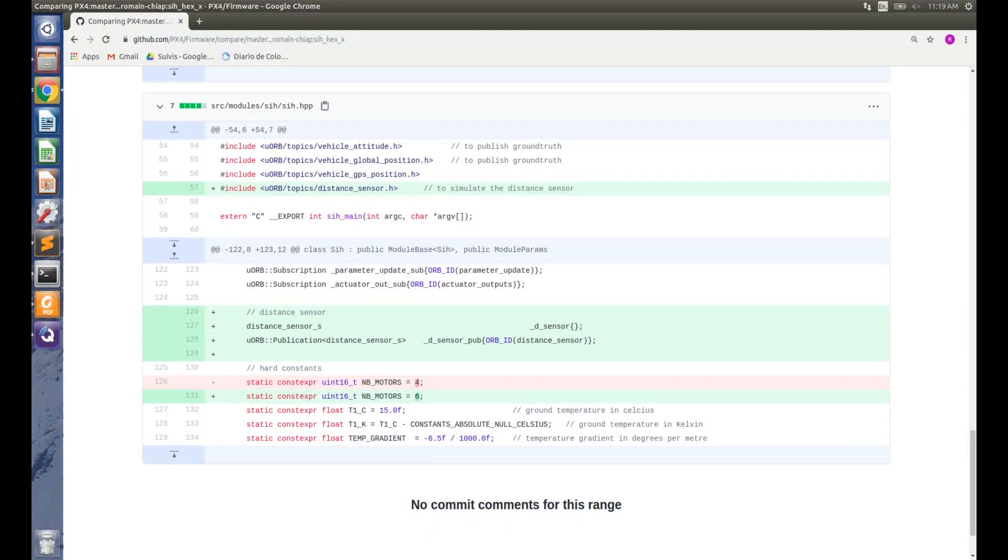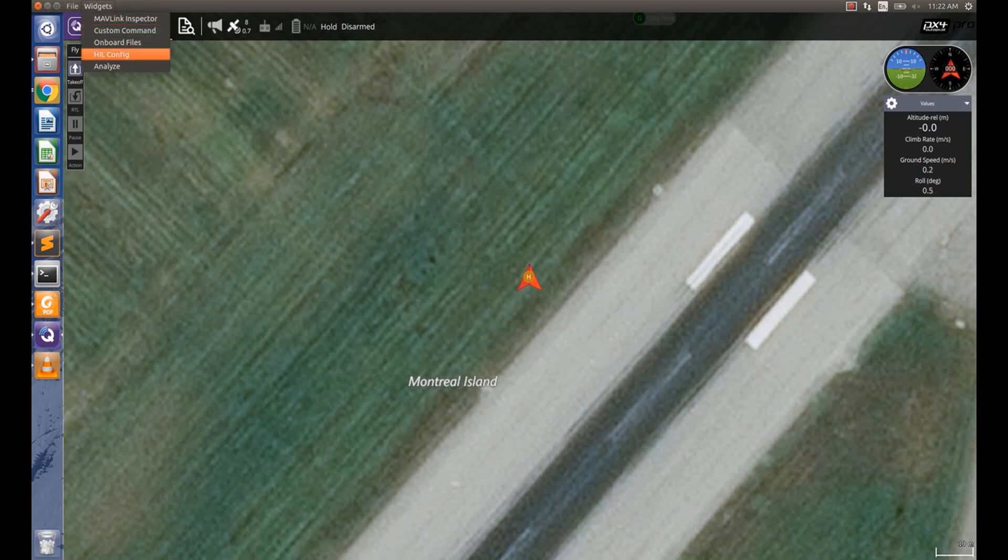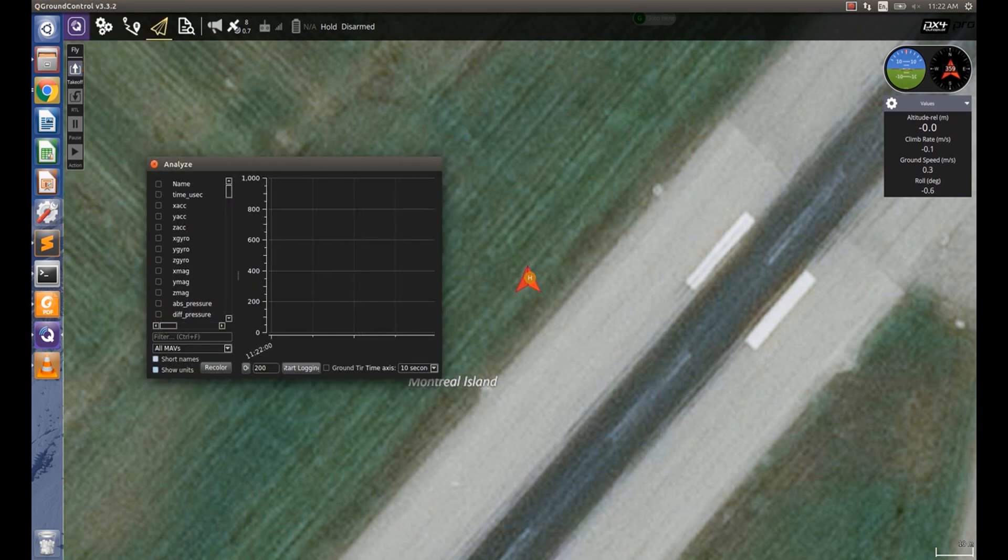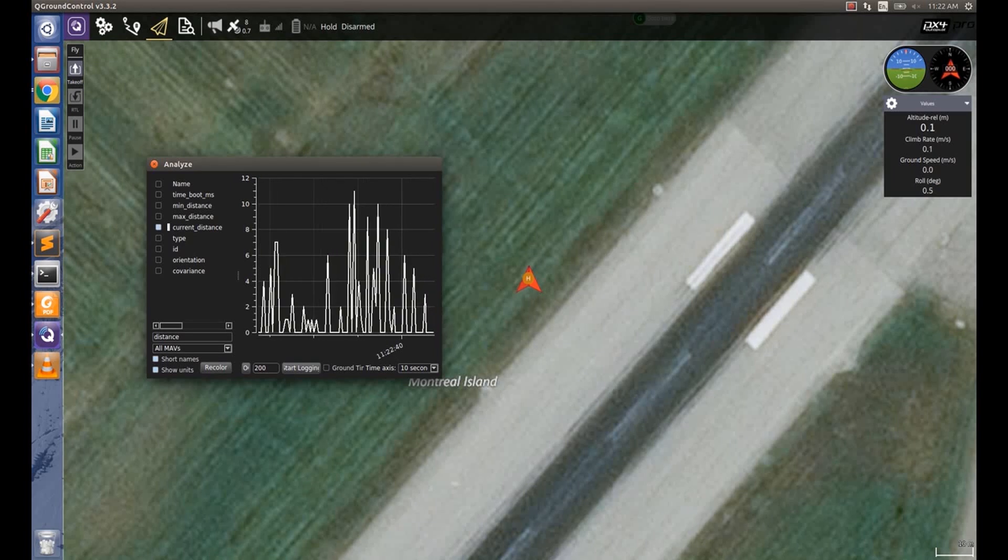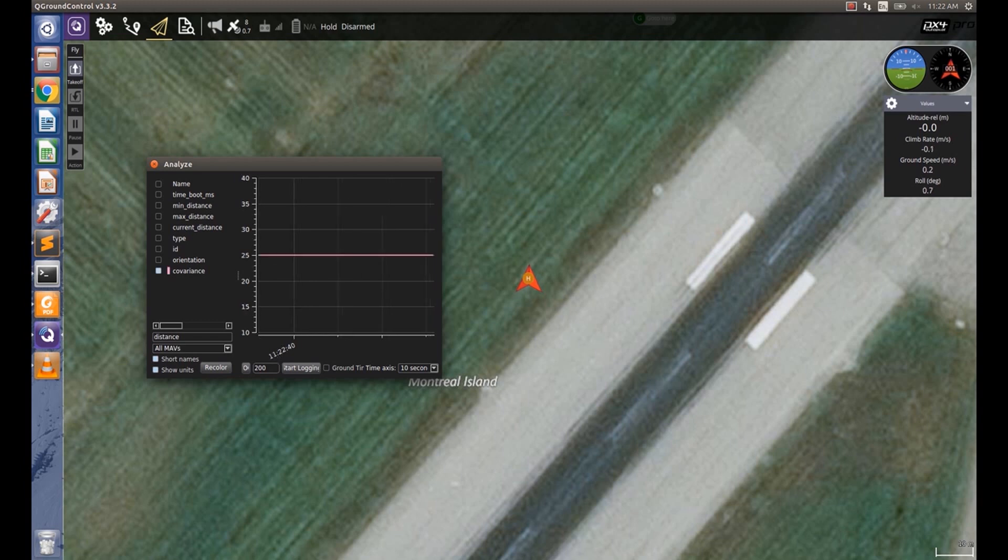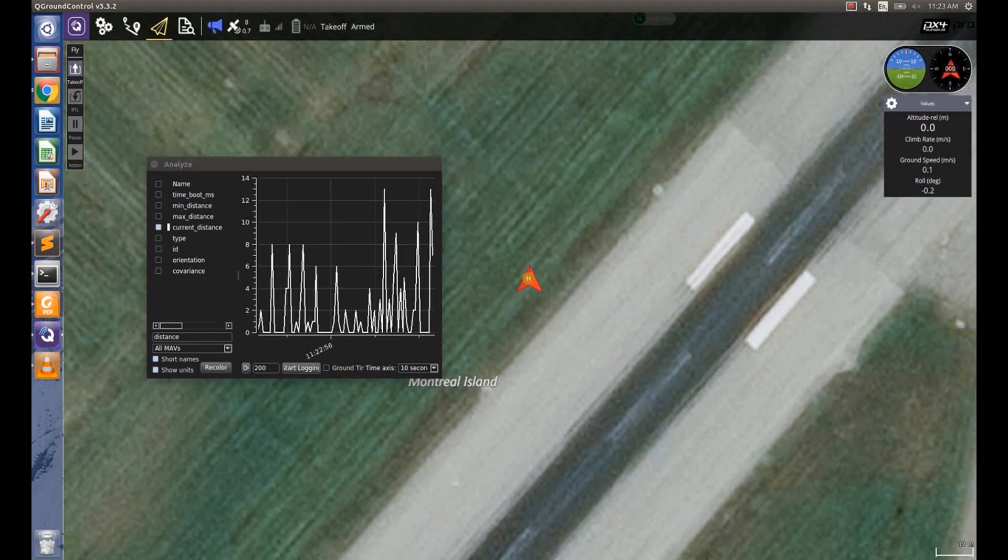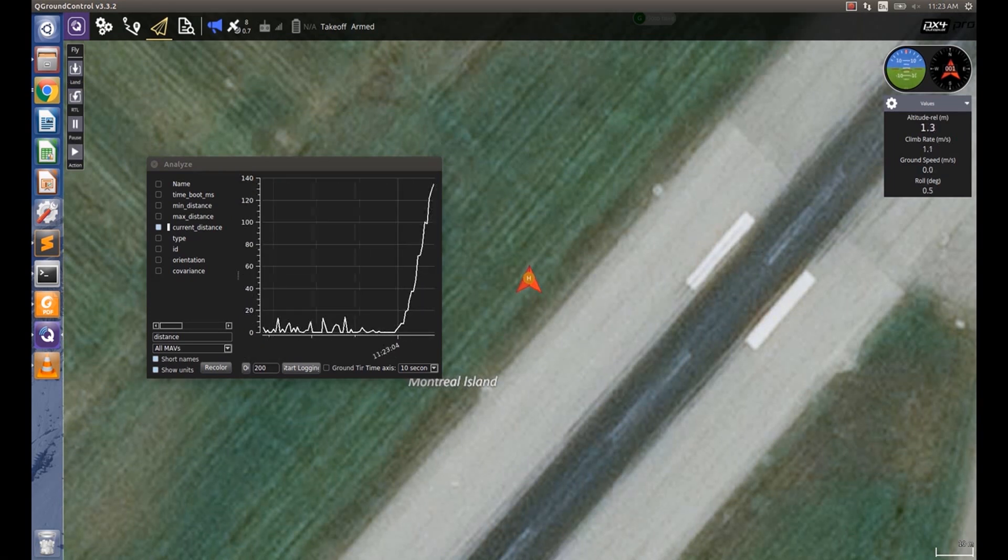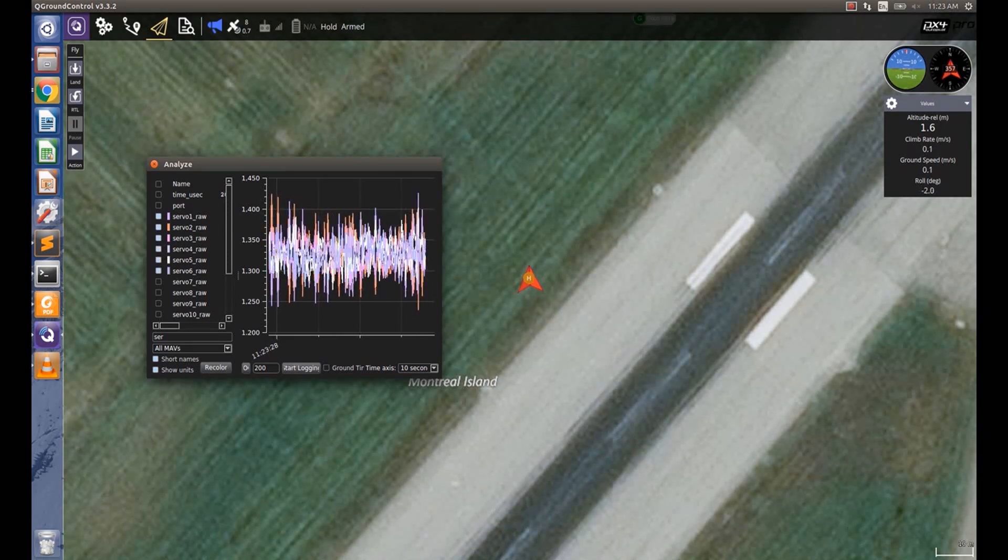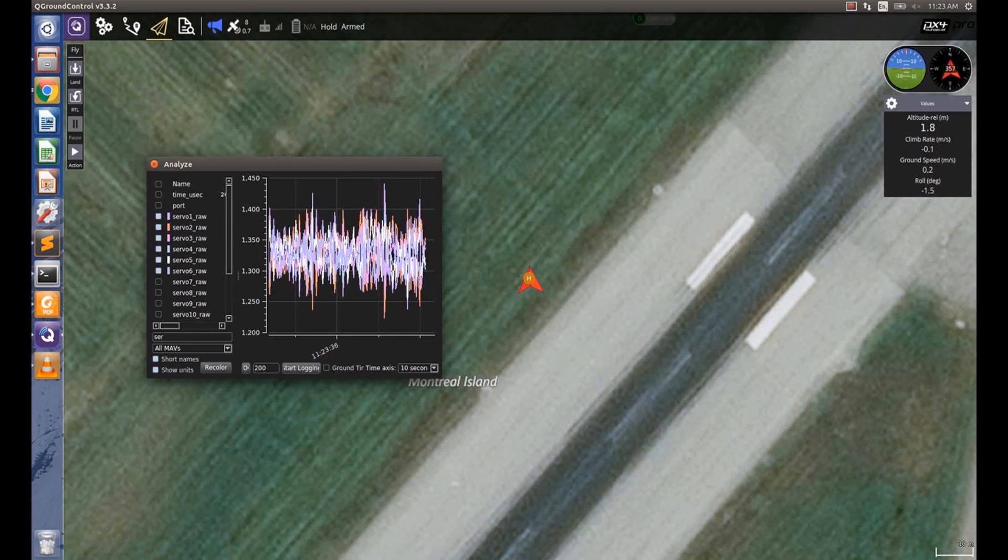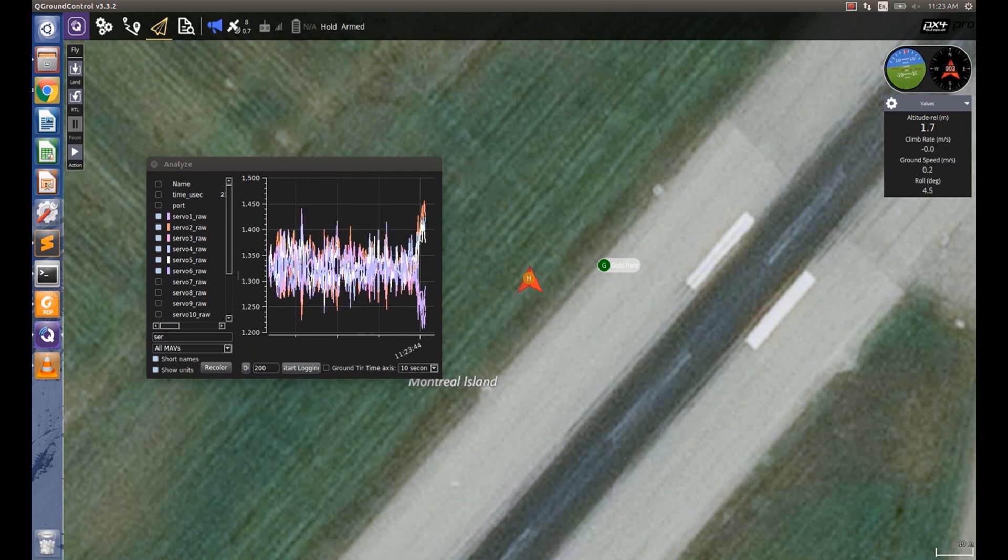How does the SIH behave with this code? So here is our vehicle at the airport. Let's open Widget, Analyze, and look for our distance sensor. Here it is. Min distance, max distance in centimeters. Here's the current distance in centimeters as well. We can clearly see the noise, and our covariance is 25 cm². Let's observe the current distance and take off. Now, how do we know we are not simulating a quadrotor? Well, let's have a look at the simulated PWM outputs. As you can see, we have 6 of them, and they are being modulated to produce the reference maneuver. So here is our hexacopter being simulated in the SIH.